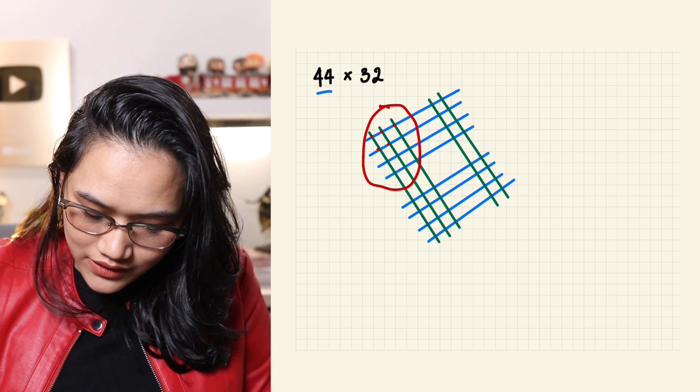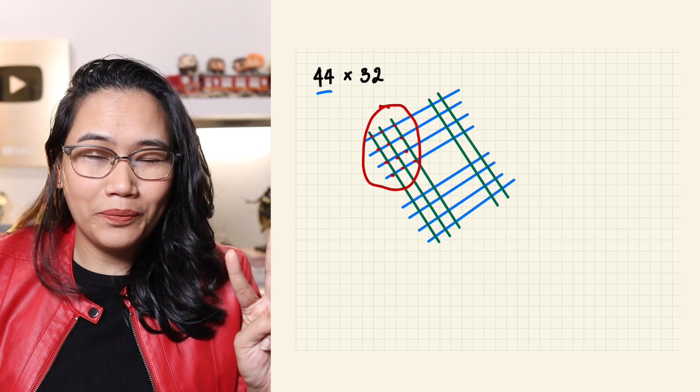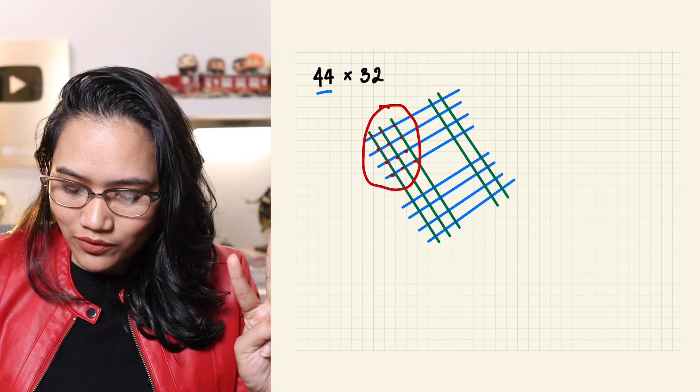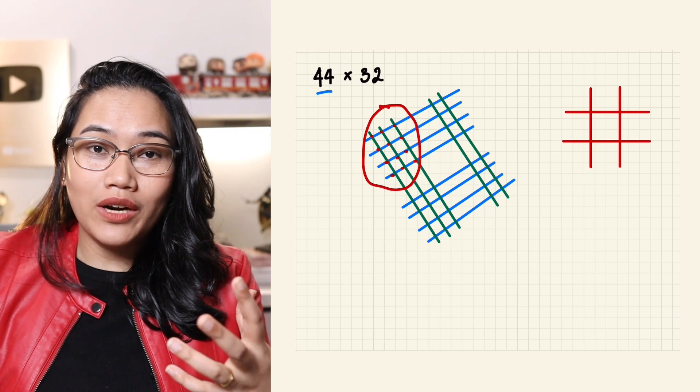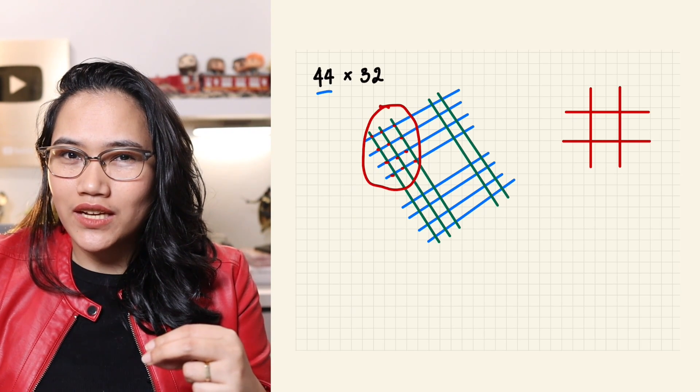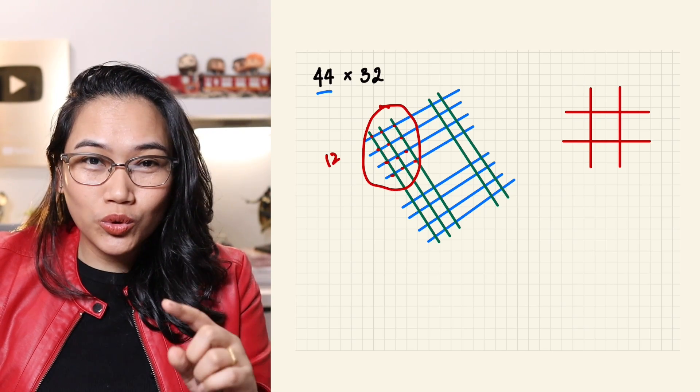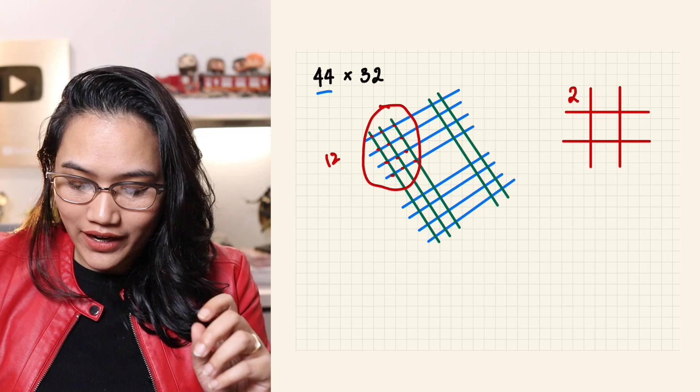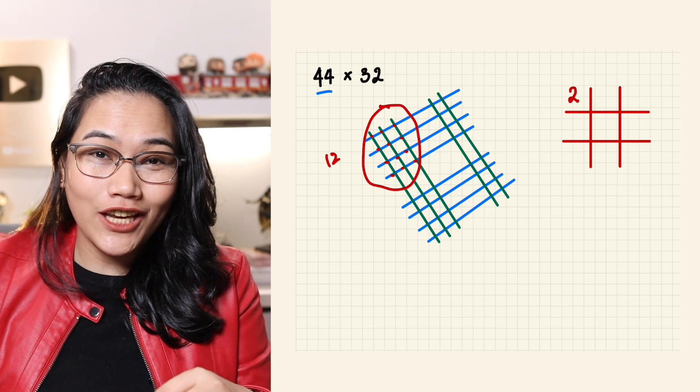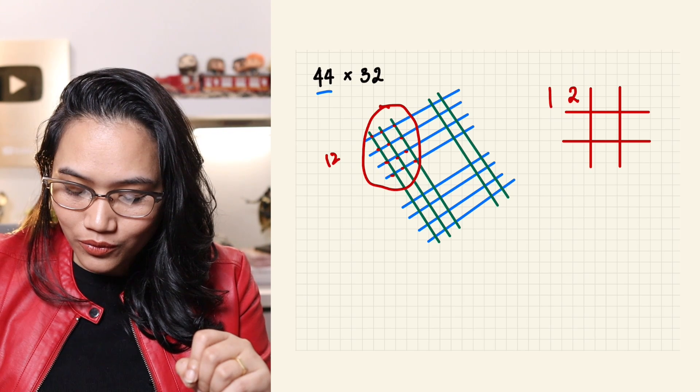Now, we count. This section right here: 1, 2, 3, 4, 5, 6, 7, 8, 9, 10, 11, 12. That's 2 digits. Now, to reduce confusion, we can write a grid like this, like tic-tac-toe, just to represent where you'll place those digits. The first number we got is 12.